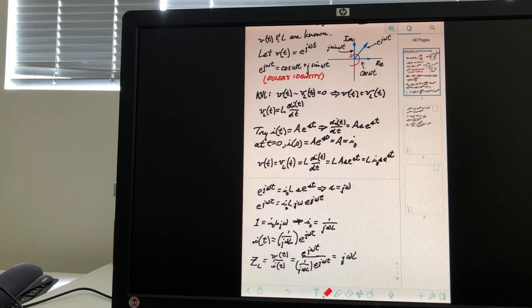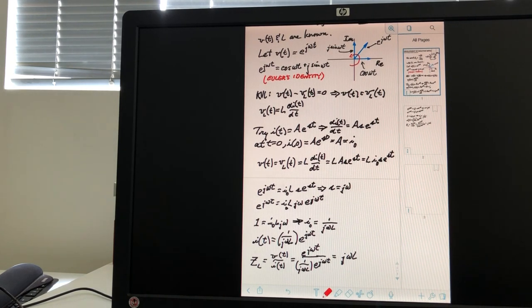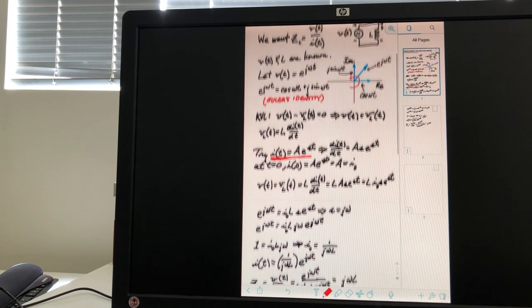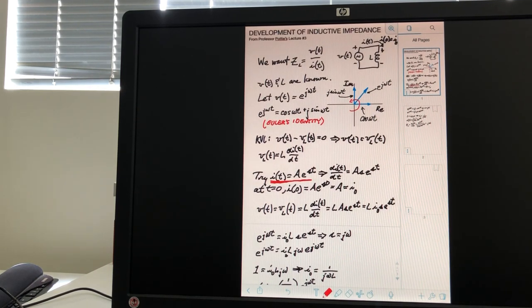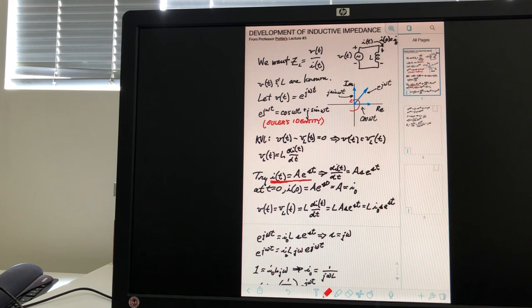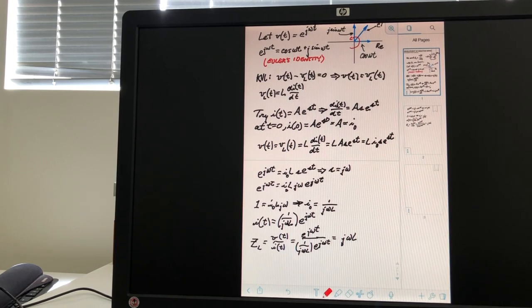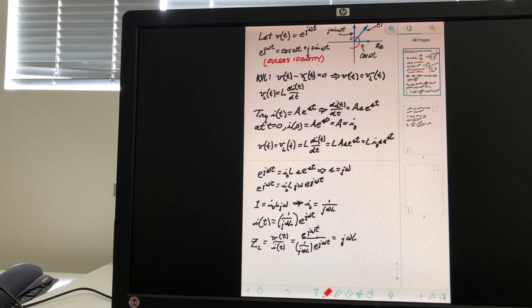at this point then we can say that I of T, which is this expression, we're going all the way back up to this one now. We're going all the way back up here because remember this is what we want. We want I of T right here. So, we have, now we want an expression for I of T. We've guessed an expression for I of T. And now we have an expression that we can use, which is, instead of A, it's going to be one over j omega L. And e to the ST, where S is j omega. So, that is this expression right here.